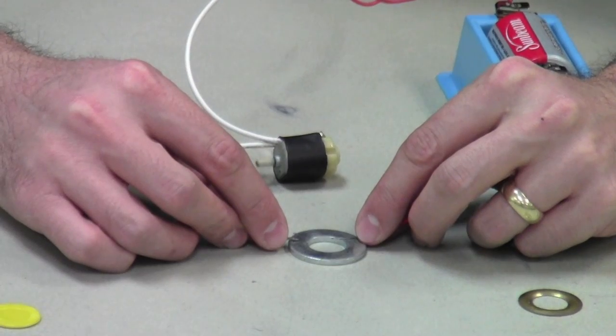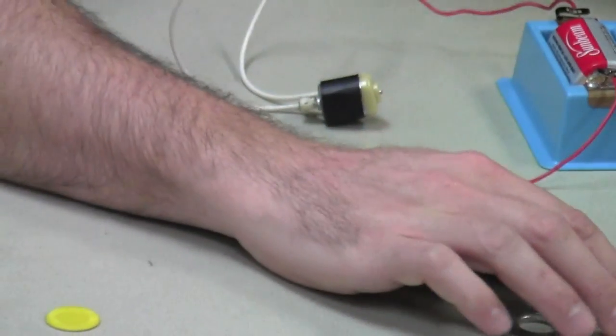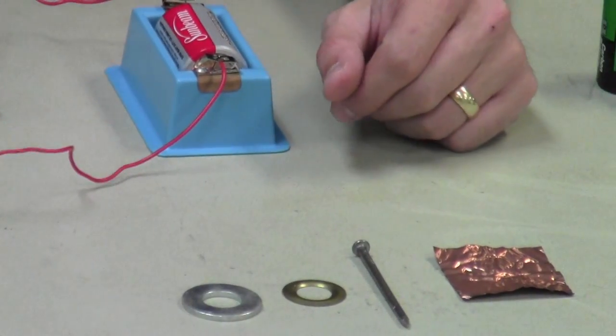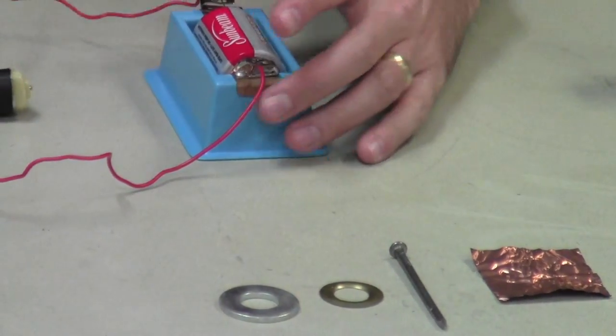All of those will again allow the electrical energy to flow through it. So in this case, metal is a very good conductor of electrical energy because it allows the electrical energy to flow through the circuit.